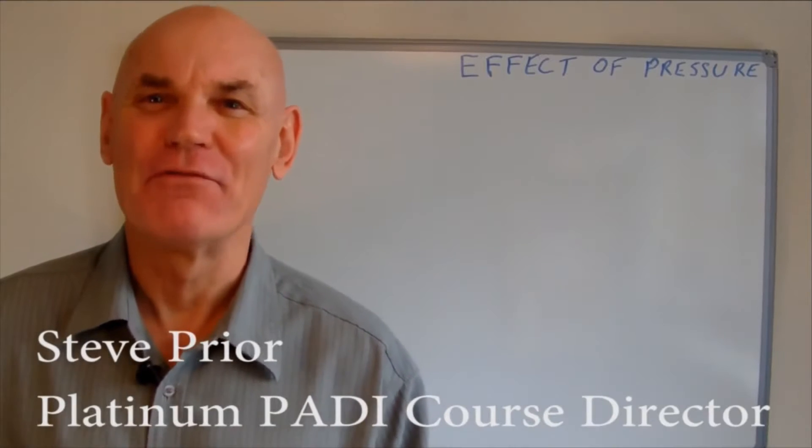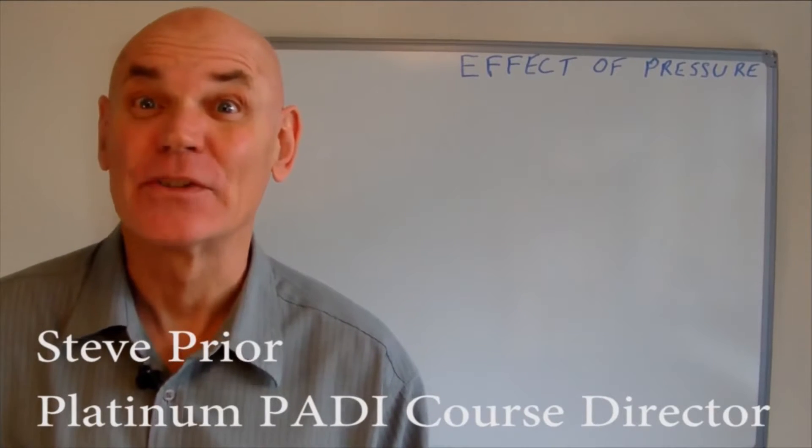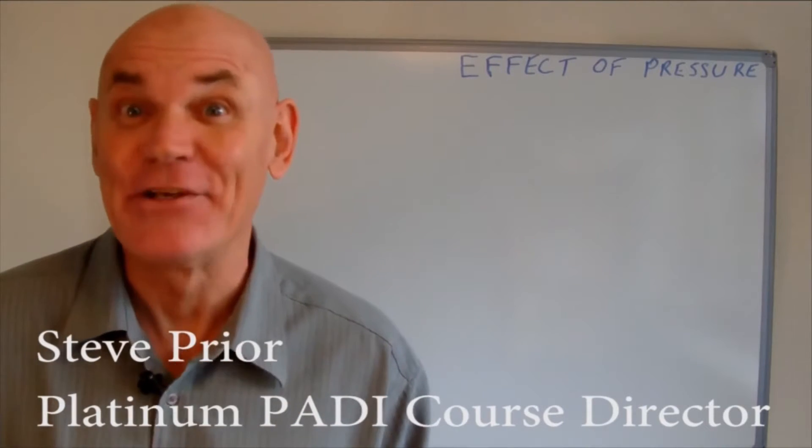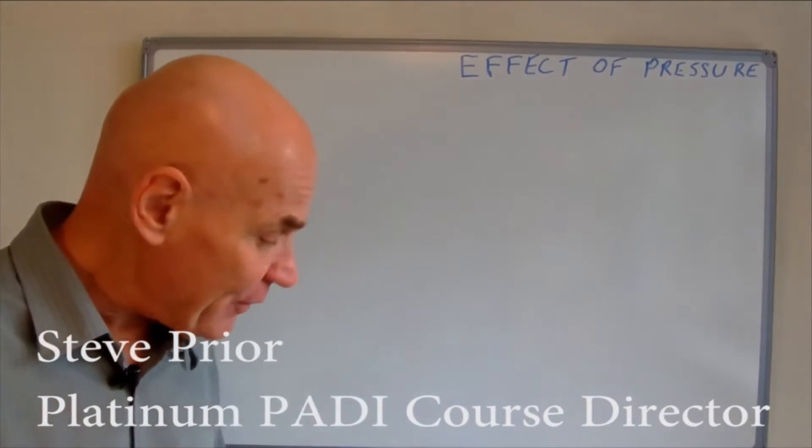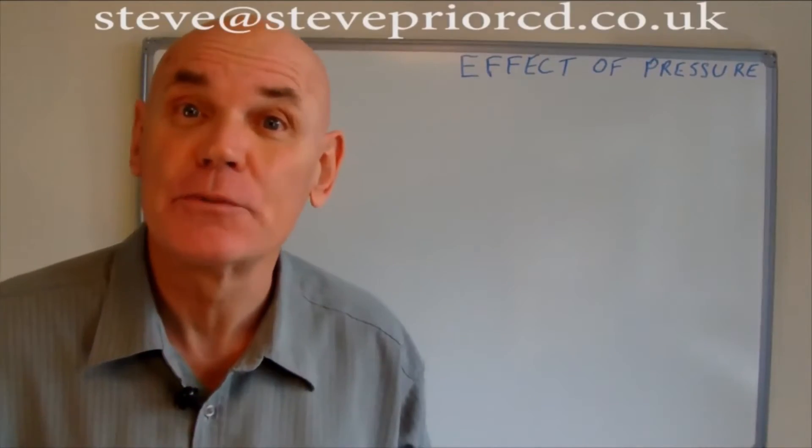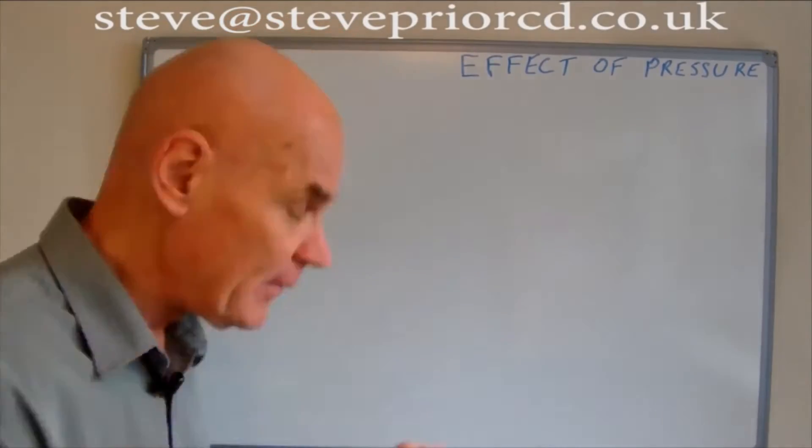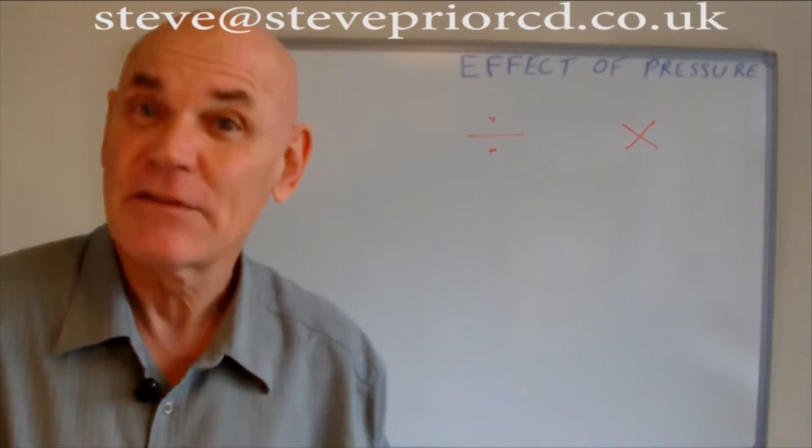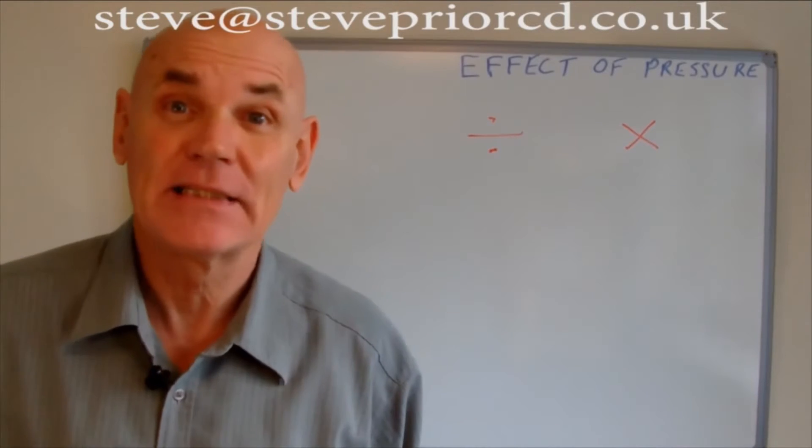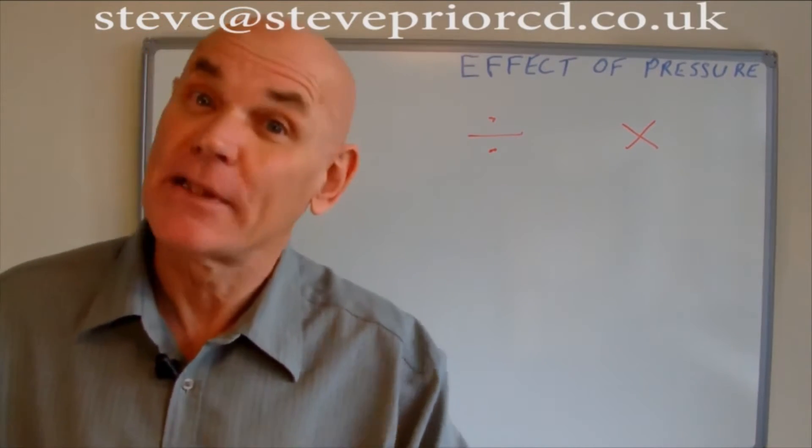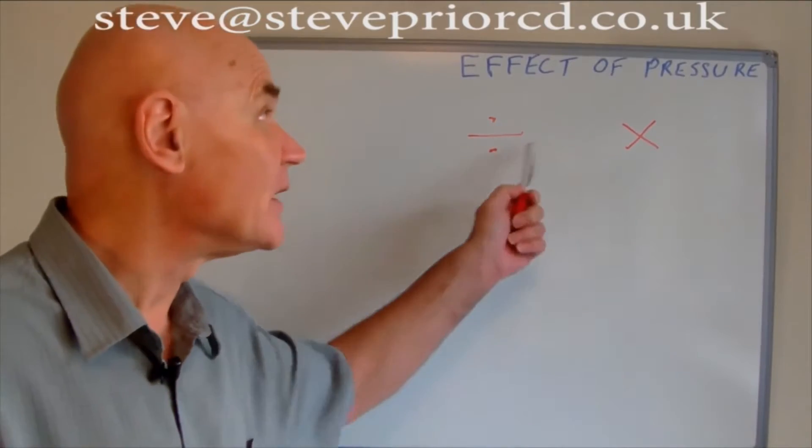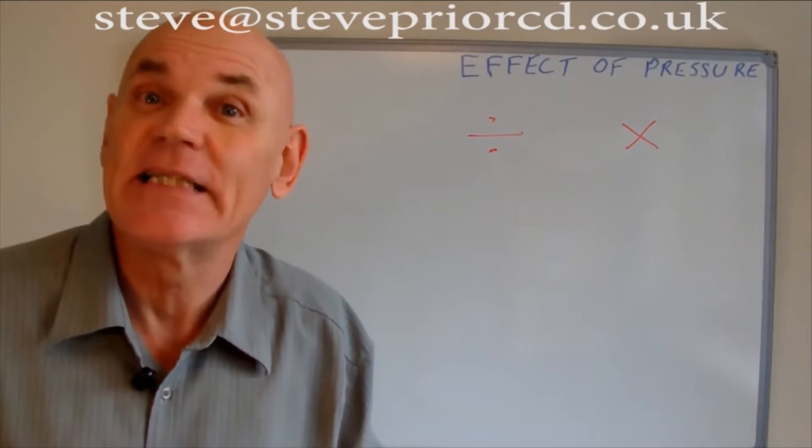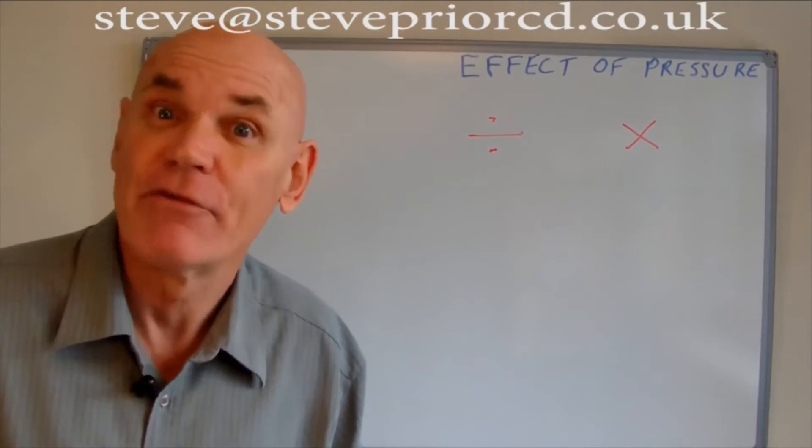I hear so often from people doing a divemaster course, 'I can't do maths.' Actually, I find that the people that say that can do maths. The problem they have is not doing maths - it's getting confused between two signs, the divide or multiply signs. Once they've decided which sign to use, their mathematics are perfect. They get the sum right but they get the answer to the question wrong because they've decided to use the wrong sign. This actually is easy - it's nothing to do with maths, it's the easy bit, it's the bit that you know about, the diving bit.